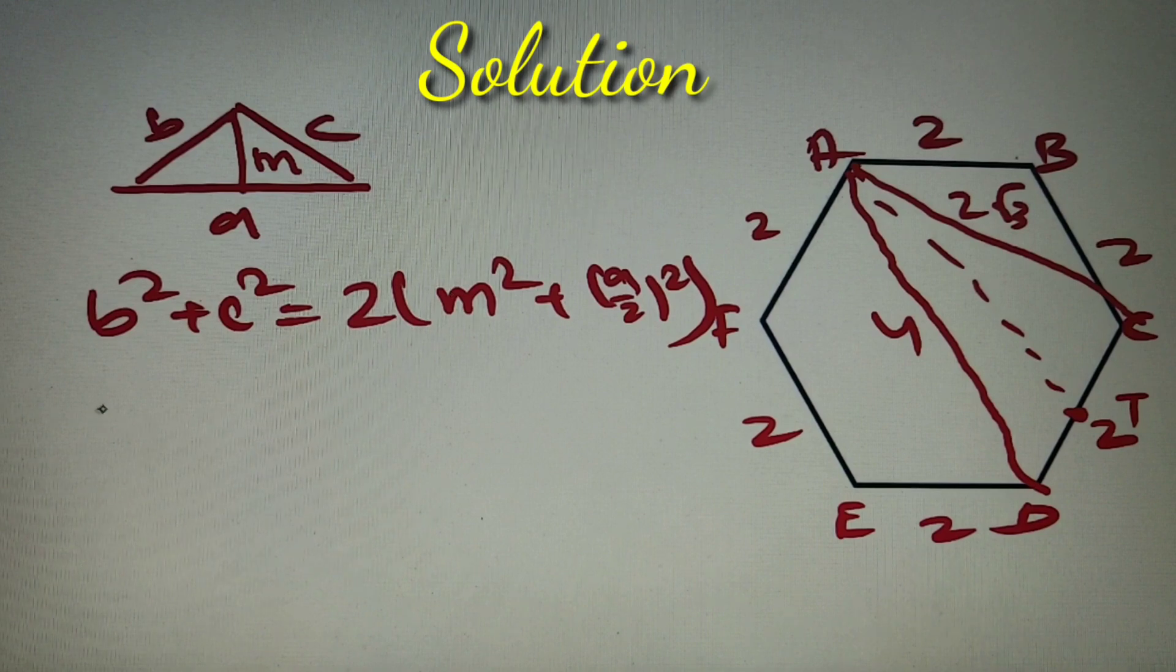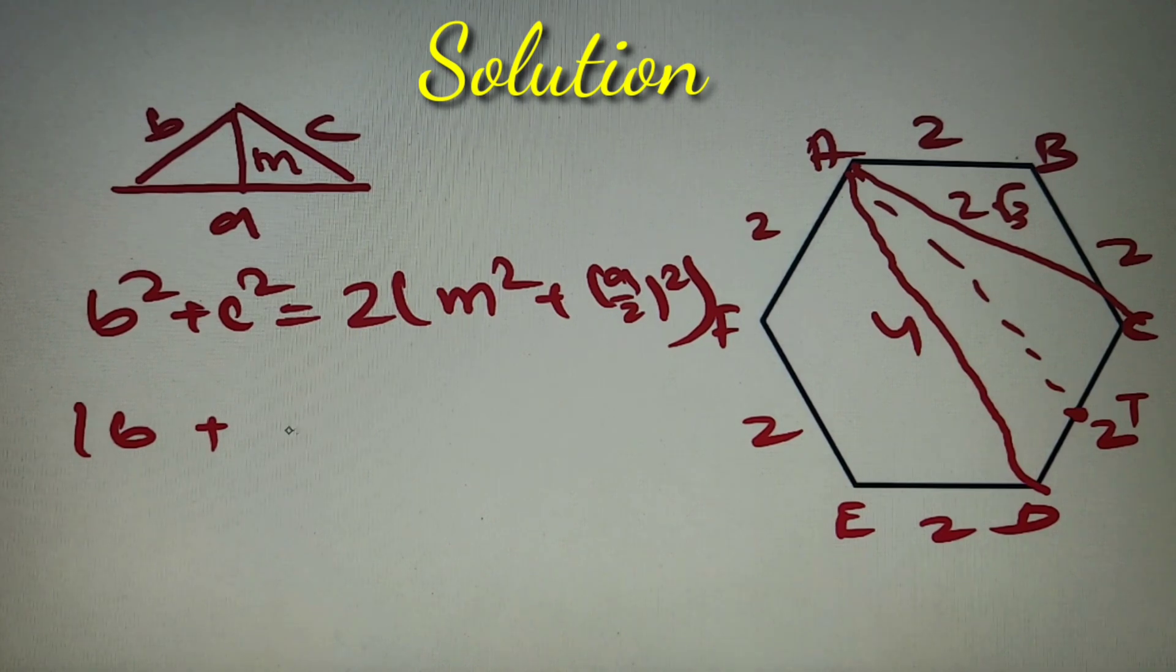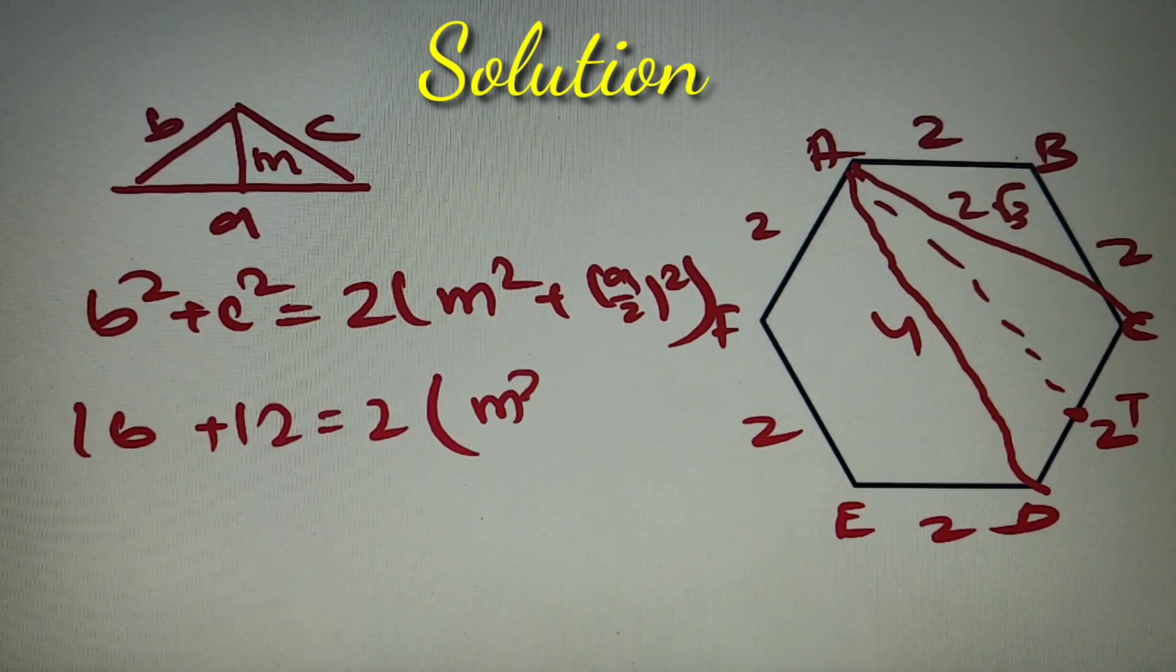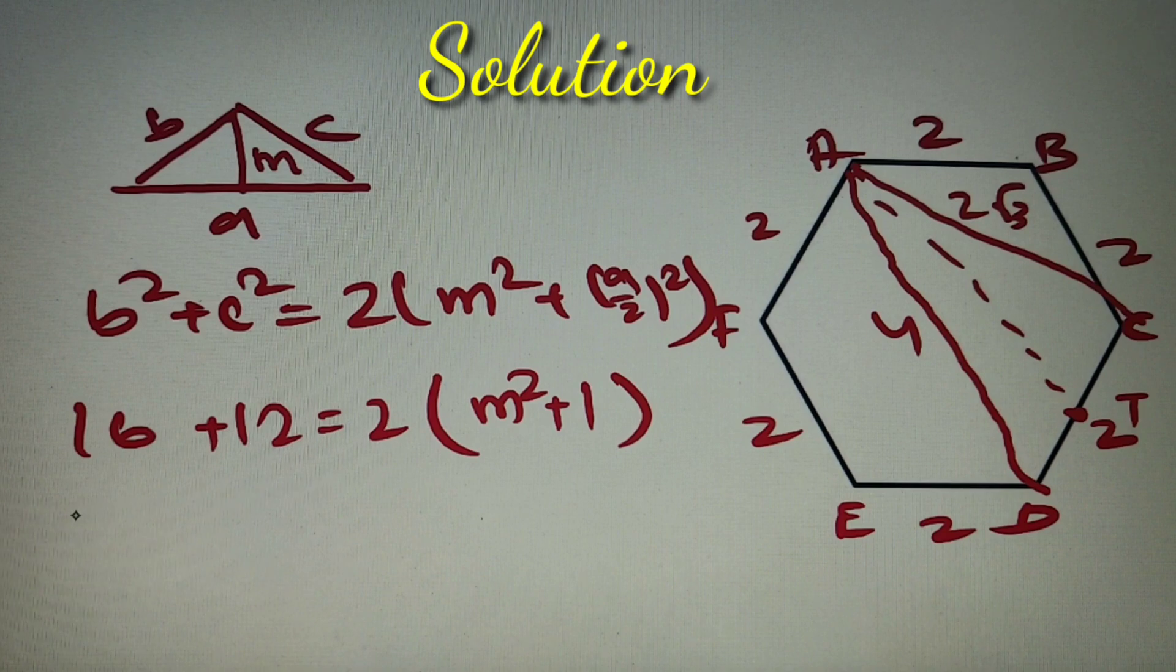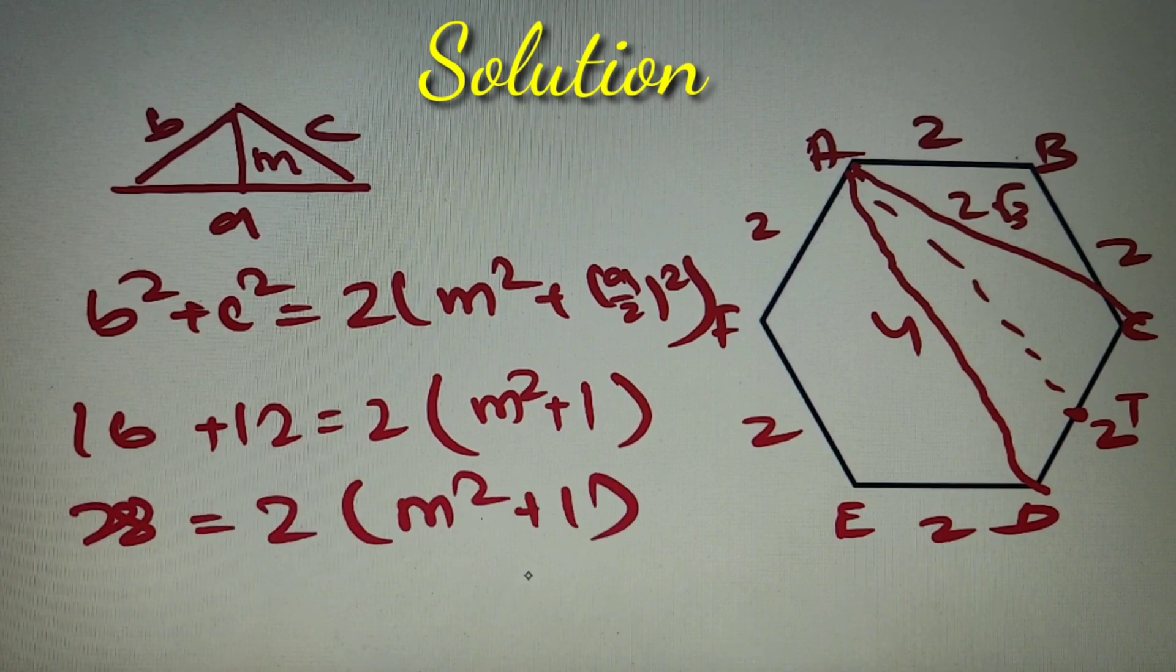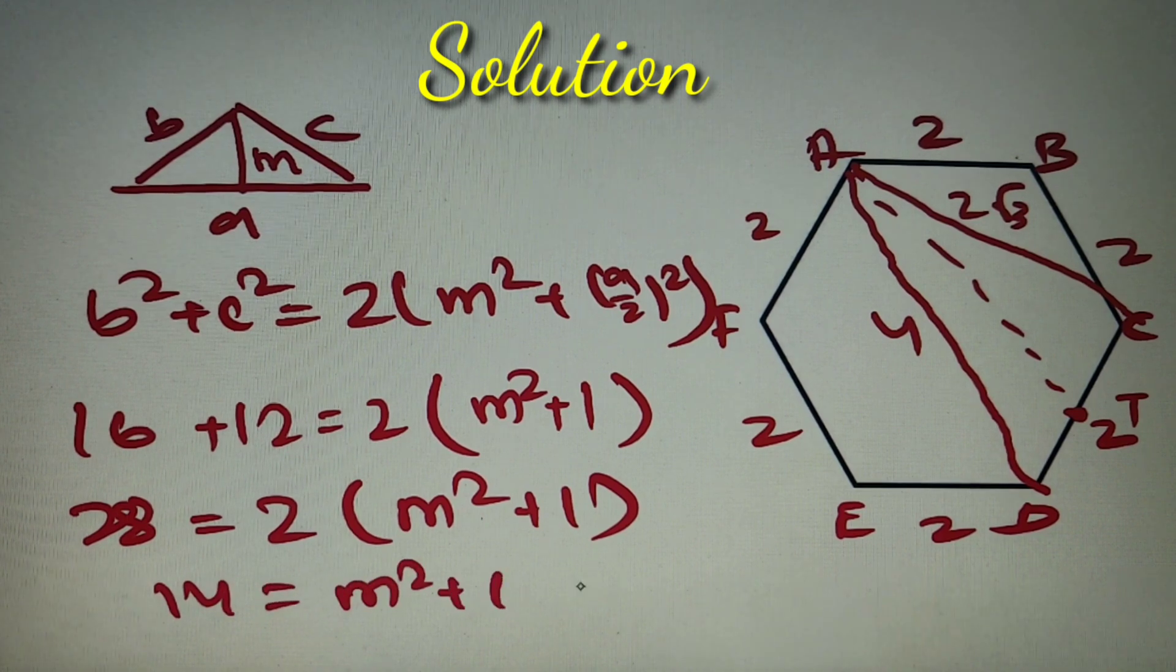So we can see that b square can be taken as 16. C square can be taken as 2 root 3 whole square which is equal to 12 is equal to 2 into m square. That is we have to find plus a by 2 whole square that is equal to 1. So basically we have got 28 is equal to 2 into m square plus 1. So we have got 14 is equal to m square plus 1.